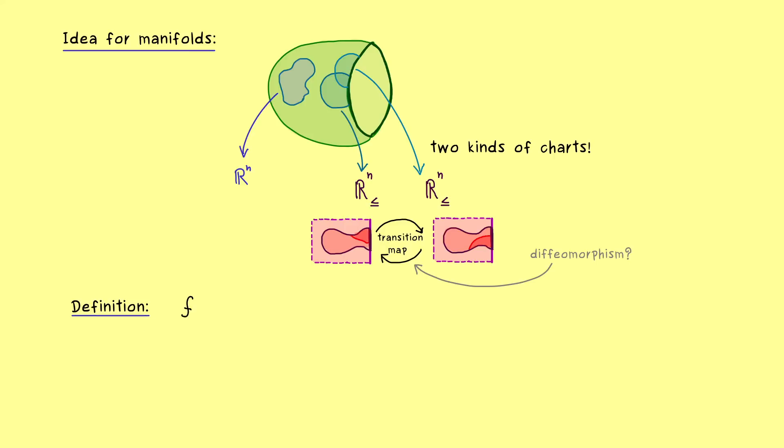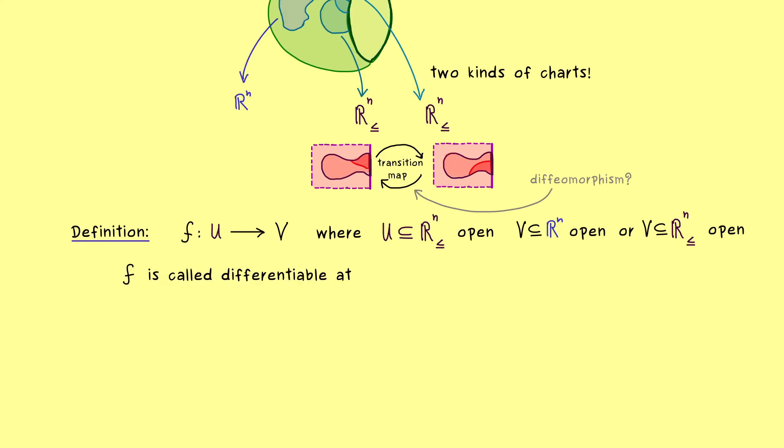So let's say we have a map f from an open set U from the half-space into Rⁿ. And maybe let's already fix that as an open set V. And now U should be an open set in the half-space, but V could be an open set in Rⁿ or an open set in the half-space. So we keep it simple and consider both cases together. This doesn't make a big difference because the notion of differentiability is about the points in the domain. More precisely, we would say that f is called differentiable at a given point x in our domain U if we can just extend the function beyond the boundary and are still differentiable.